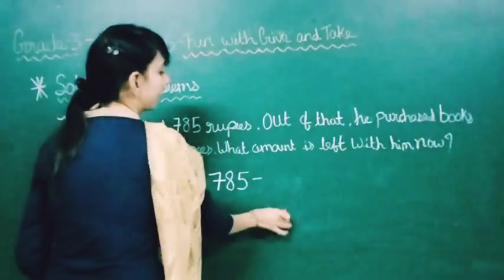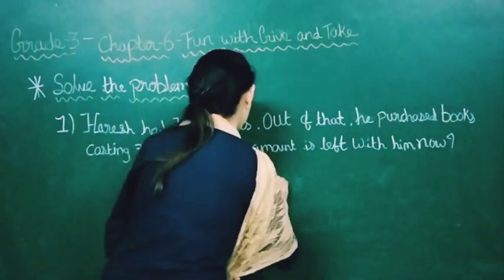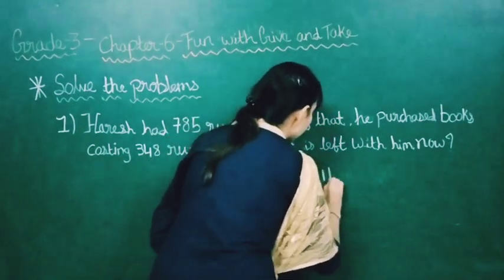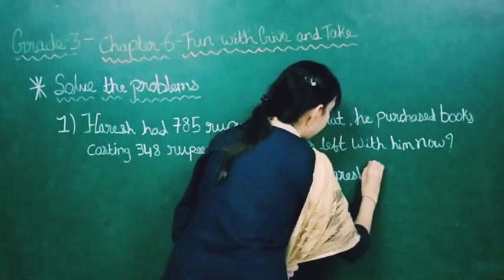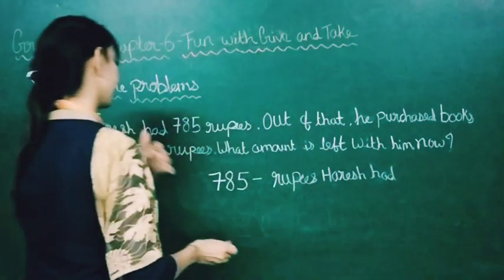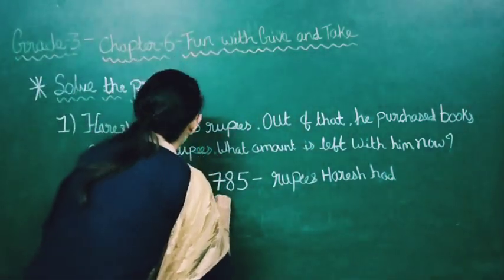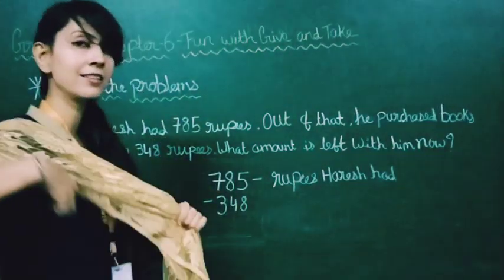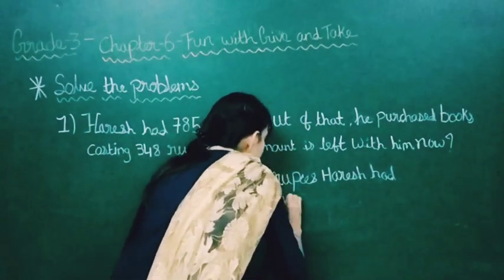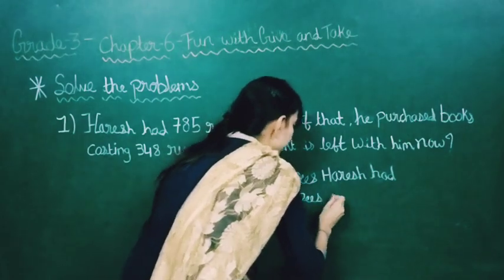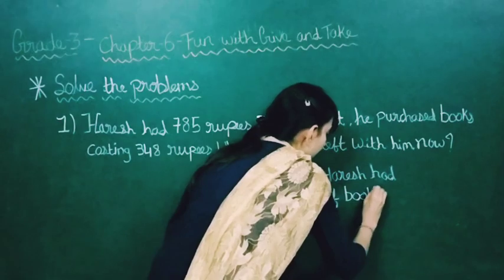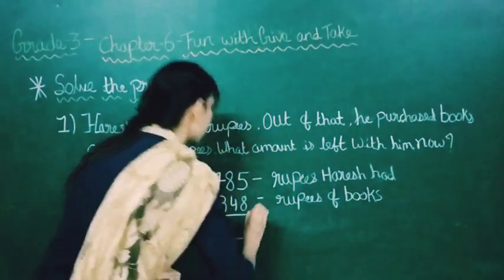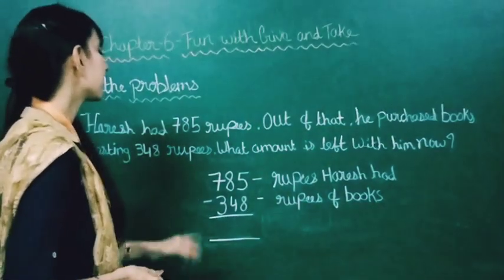785. Here you have to write a statement also. Now we will subtract 348. We have to always start from the ones place. As you can see, 8 is greater than 5.